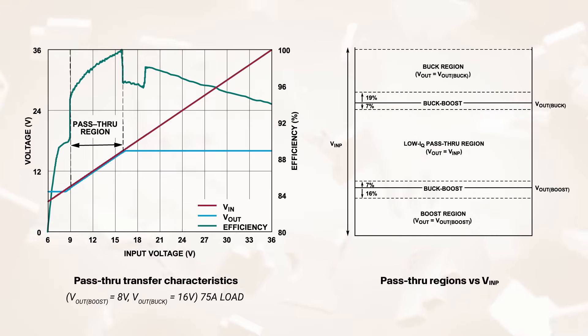The controller features a programmable window for pass-through which passes the input directly to the output when the input is within the user programmable voltage window. When the input is in this window there are no switching losses or EMI and the controller quiescent current drops to 18 microamps enabling efficiency up to 99.9%. Outside this window the buck or boost regulation loops maintain the output at the programmed maximum or minimum values. This is true for line steps or surges where the controller can respond quickly to regulate the output within the set limits.